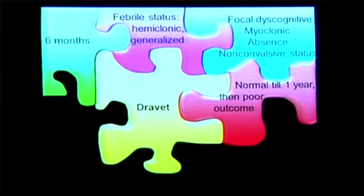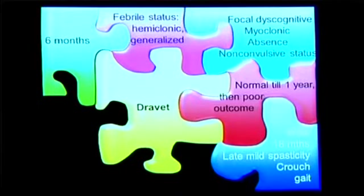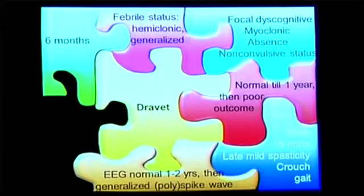The child's development is normal in the first year of life, but then slows, and most of the children have an intellectual disability. Examination is usually fairly normal early in life, but then the child develops mild spasticity and eventually a crouched gait.